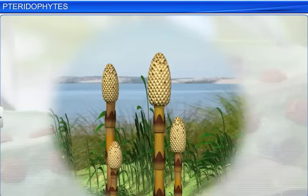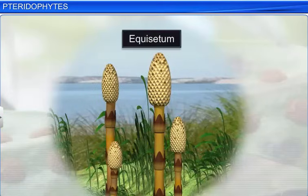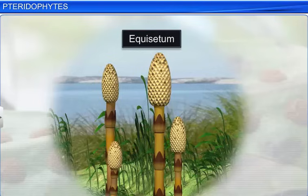However, in some genera like Equisetum, sporophylls might form distinct and compact structures called strobili, or cones.